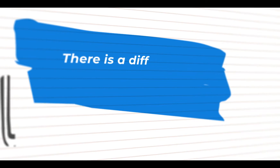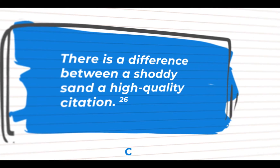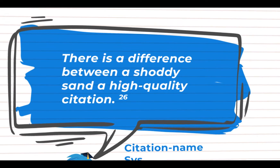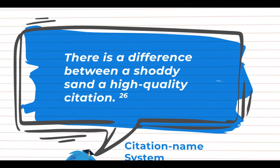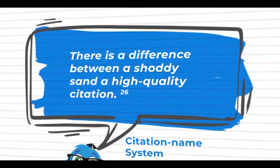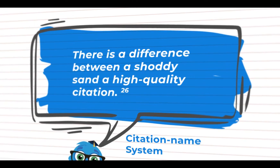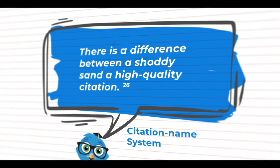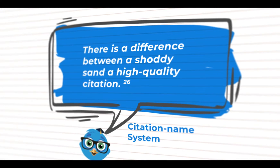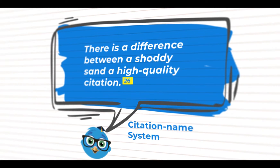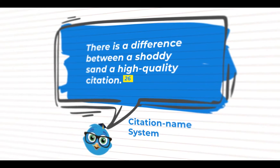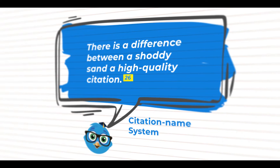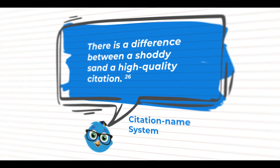The citation name system is very close to the previous one. The only difference is that your source's numerals follow alphabetical order. So your numeral 1 turns into, let's say, 26 or whatever number it has among the other sources alphabetically, even if it's the first source you mention.